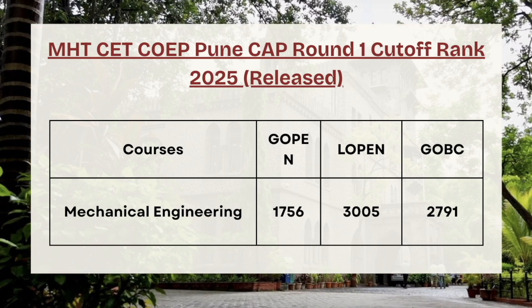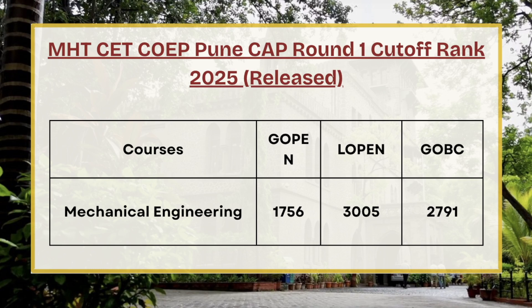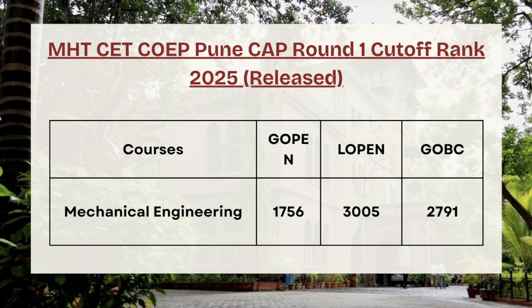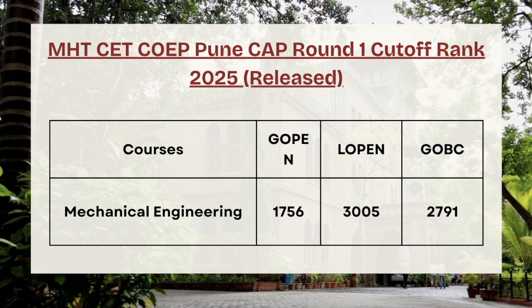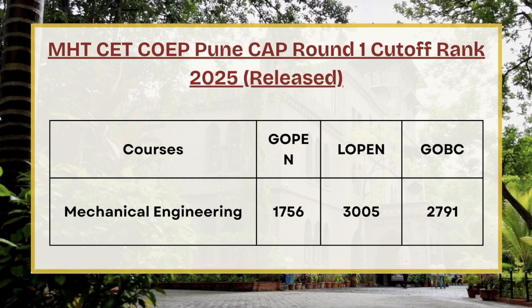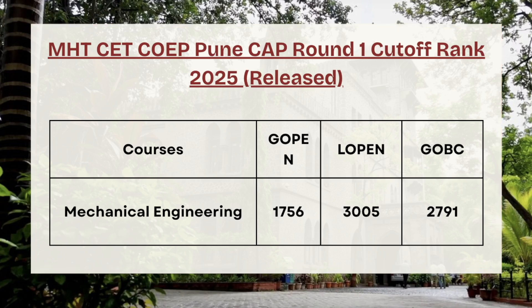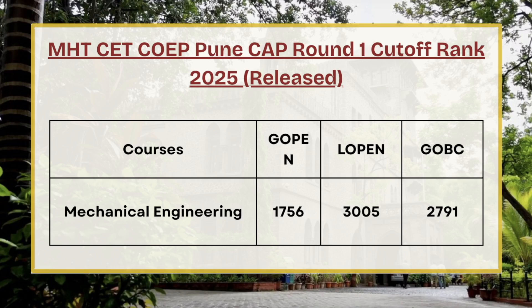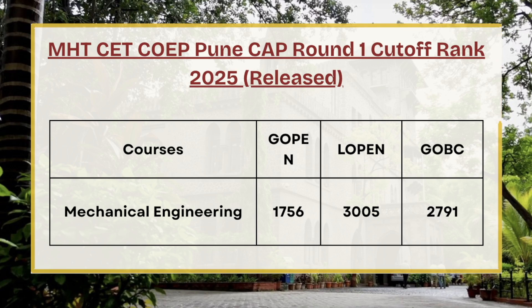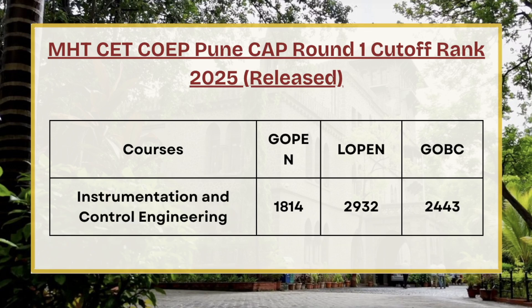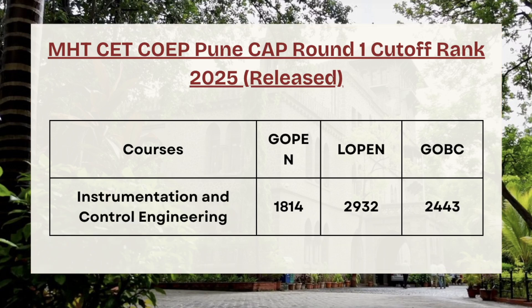Next in the list we have Mechanical Engineering. As you can see on screen, for G-Open the cutoff rank is 1756, for L-Open the cutoff rank is 3005, and for GOVC the cutoff rank is 2791.